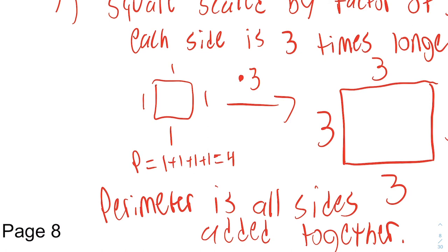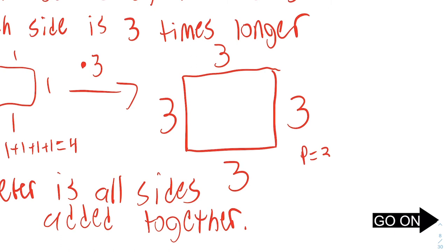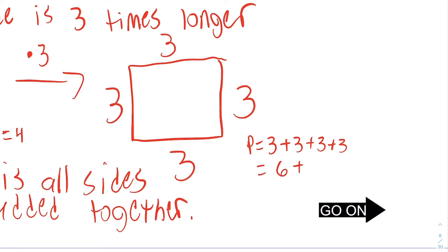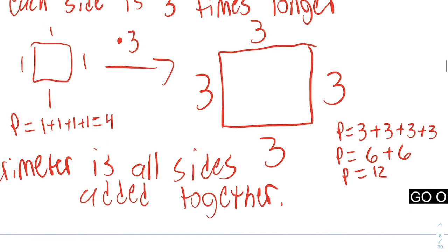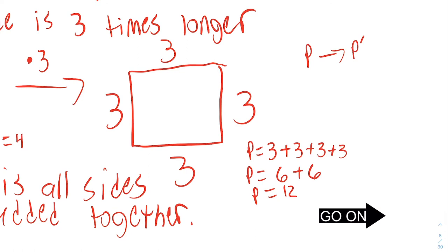For the new square, the perimeter is going to be the left, which is three, plus the bottom, plus the right, plus the top. That's going to make six, plus six, which is going to make twelve. So the perimeter of the square on the right is twelve. The square on the left is four. So the perimeter changed from four to twelve. The perimeter started as four. Once we multiply by the scale factor of three, the perimeter became twelve.